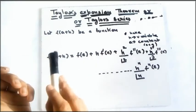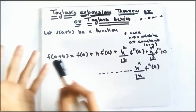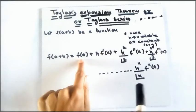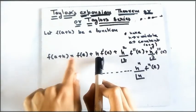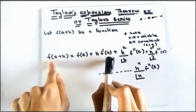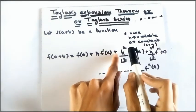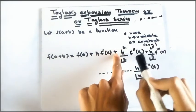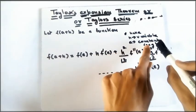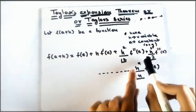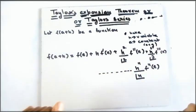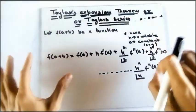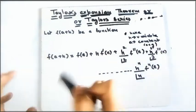To remember the Taylor series: you write f(a + h), then start with f(a), then h·f'(a) — that's the first derivative — then h²/2!·f''(a) — that's two times differentiation — then h³/3!·f'''(a) for three times differentiation, and hⁿ/n!·fⁿ(a) for n-th differentiation. Some books write it as x + a or other forms, but the pattern is the same.